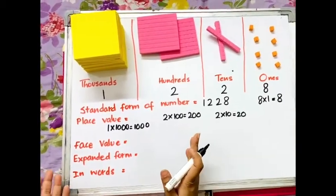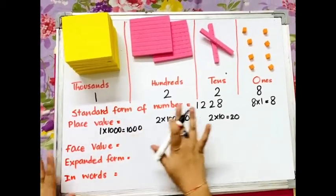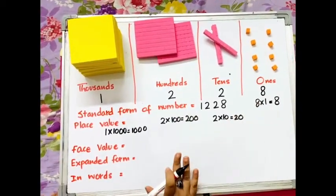Hope it's now clear to everyone how to find the place and the place value of any digit in a number.